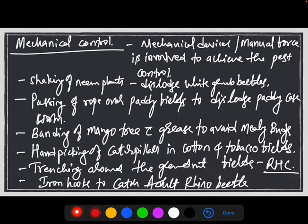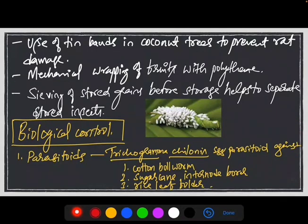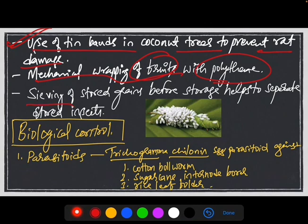The next method is mechanical control, where mechanical devices or manual forces are involved to achieve pest control. Like shaking of neem plants to dislodge white grub infestations, passing rope over paddy fields to dislodge paddy caseworms, banding of mango trees with grease to avoid mango mealy bugs, hand picking of caterpillars in cotton and tobacco fields, and trenching around groundnut fields against red-headed caterpillars. Other examples include use of tin bands in coconut trees to prevent rat damage, mechanical wrapping of fruits with polythene, and sieving of stored grains before storing to separate stored insects.